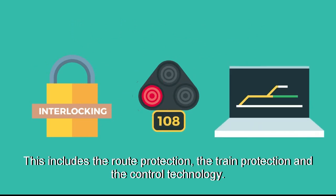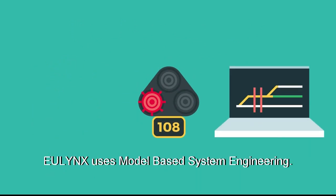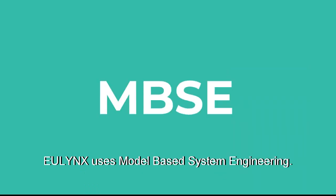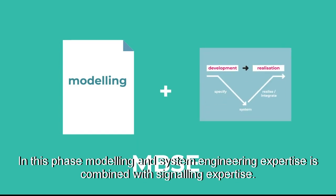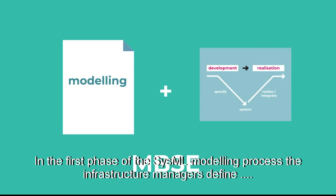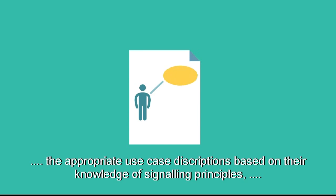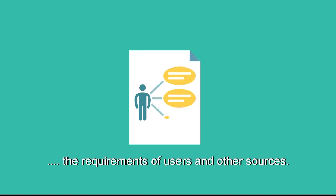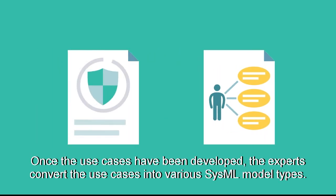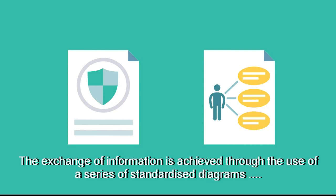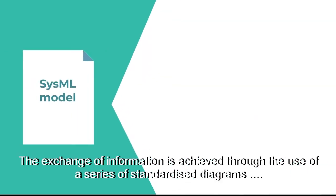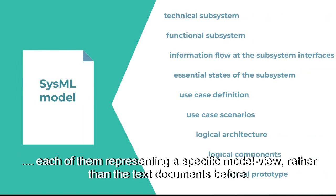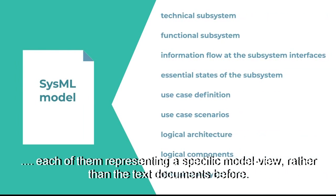U-Lynx uses model-based system engineering, in which modelling and system engineering expertise is combined with signaling expertise. In the first phase of the SysML modelling process, the infrastructure managers define the appropriate use case descriptions based on their knowledge of signaling principles, the requirements of users and other sources. Once the use cases have been developed, the experts convert the use cases into various SysML model types. The exchange of information is achieved through the use of a series of standardised diagrams, each representing a specific model view rather than the text documents used before.